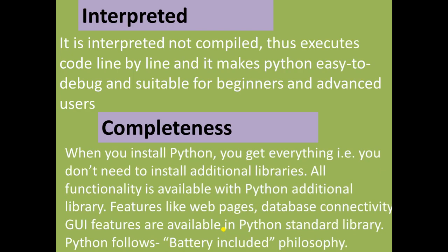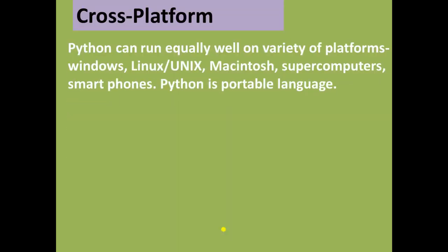Next is completeness. Python is a complete language — when you install it, you do not need to install any additional libraries. All packages are installed with Python itself. Functionality like web page access, database connectivity, and GUI features are available in the Python standard library.